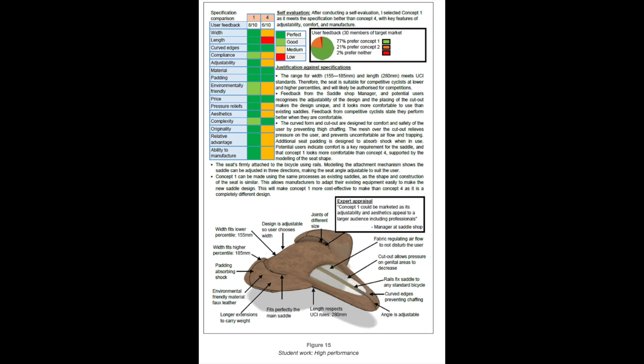This is an example of a high-performing piece of work in Strand 3 of Criterion B. The student has conducted a self-evaluation of the design, comparing the two most promising ideas at this final stage of development. The student bases decisions on feedback from an expert — the manager of a bicycle saddle shop — and potential users, a group of competitive cyclists. The selection of the chosen design idea is focused on three areas: adjustability, comfort, and aspects related to manufacture. The justification of the selected idea, having met the requirements, is presented in five distinct points. These five points state the features of the idea, describe what the features do, and justify why it is important for the design to be selected.